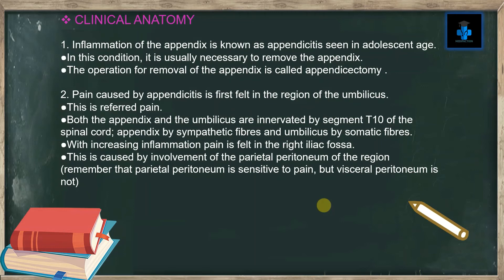With increasing inflammation, pain is felt in the right iliac fossa. This is caused by involvement of the parietal peritoneum of the region. Remember that the parietal peritoneum is sensitive to pain, but the visceral peritoneum is not.